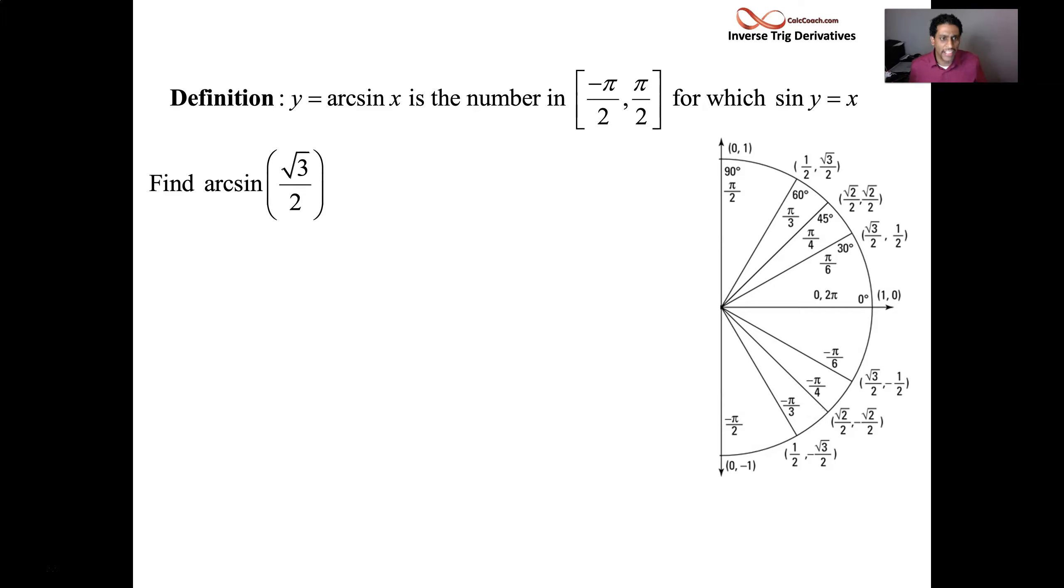What is the arc sine of √3/2? How do you read it off the unit circle? Well, we have to pose it as a question. What we're saying is find the angle that gives a y value, because that's the sine. The x is the cosine, the y is the sine. Find the angle that gives the y value equal to √3/2.